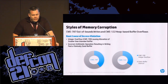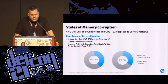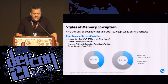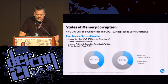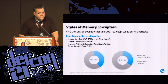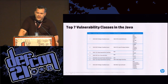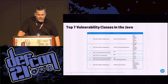Looking at memory corruption style vulnerabilities — out-of-bounds writes and heap-based buffer overflows — there are really two causes for the access violations in those two classes. We found that a third of them were caused by integer overflows causing an allocation of a smaller-than-intended buffer, and the rest were incorrect arithmetic operations. Taking all this information — both publicly available and from ZDI — we're able to determine the top seven vulnerability classes in Java.